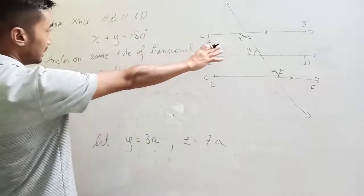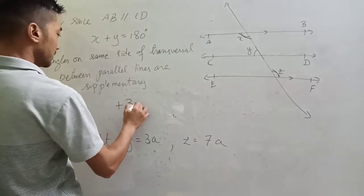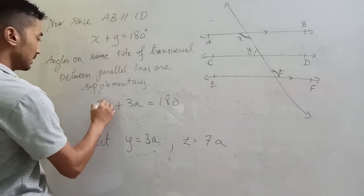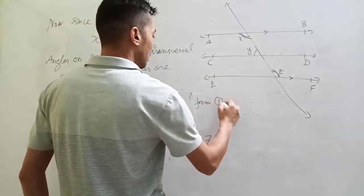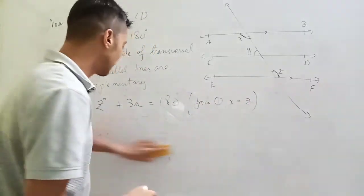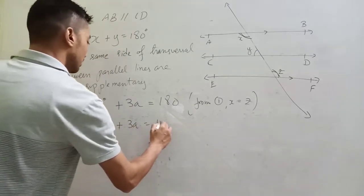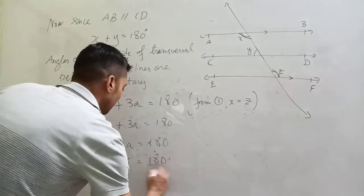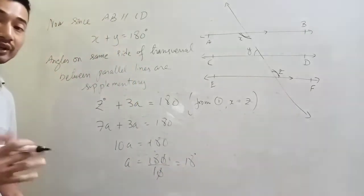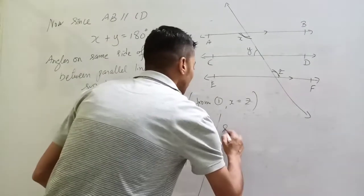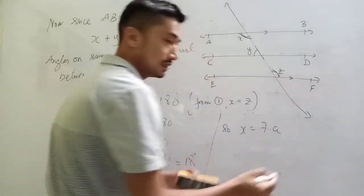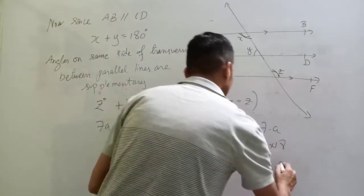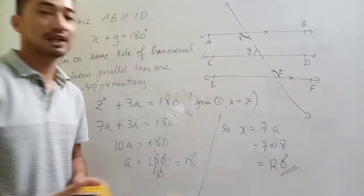From x plus y equals 180, let y equal 3a and z equal 7a. Since x equals z, x equals 7a. So 7a plus 3a equals 180, giving 10a equals 180, so a equals 18. Therefore x equals 7 times 18 equals 126 degrees.